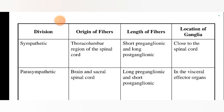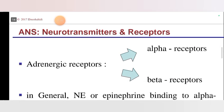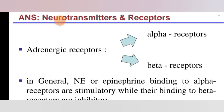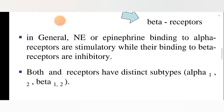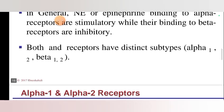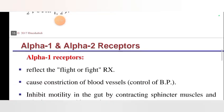Location of the ganglia in the visceral effector organ. In general, neurotransmitters and receptors: adrenergic receptors — alpha receptors and beta receptors. In general, norepinephrine and epinephrine binding to alpha receptors are stimulatory, while their binding to beta receptors are inhibitory. Both receptors have distinct subtypes — alpha and beta.